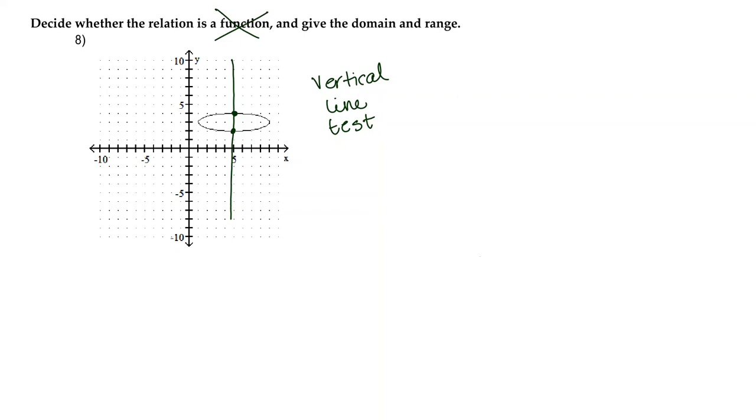So if you draw a vertical line anywhere on a relation and it touches more than once, then it is not a function. So there we go, we've established that it is not a function.